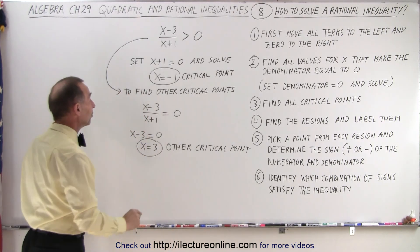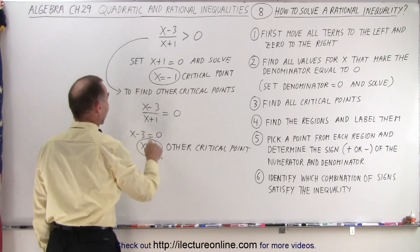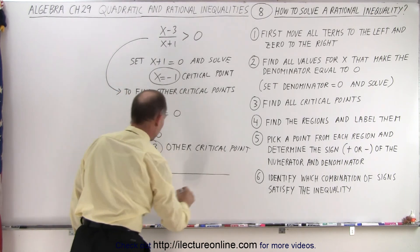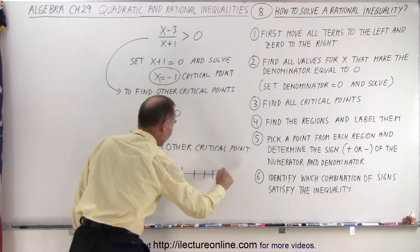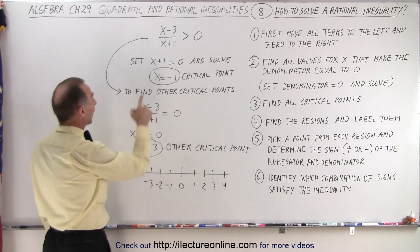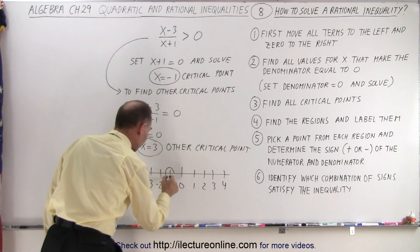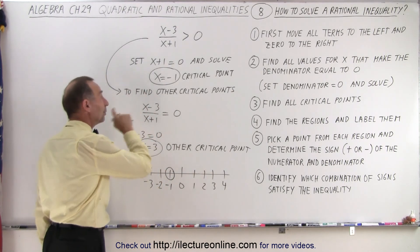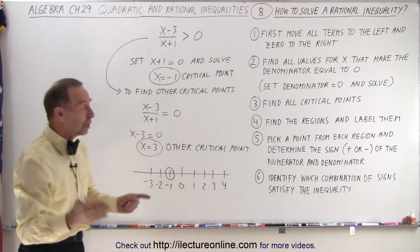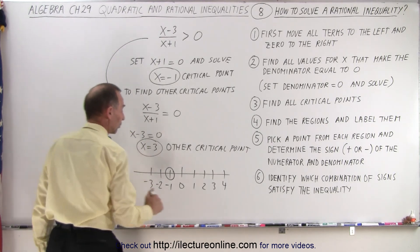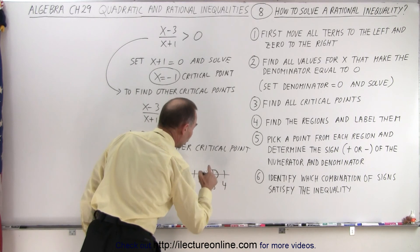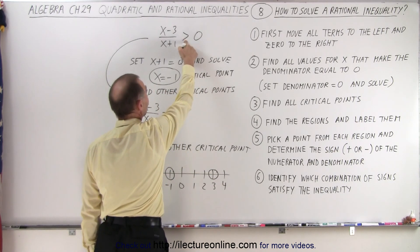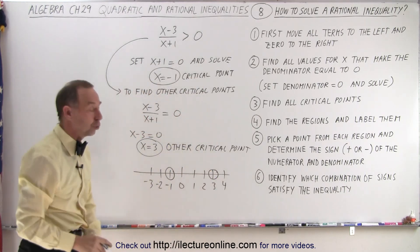Now that we found both critical points, x equals negative one and x equals three, we can place those on the number line. We draw a circle around x equals negative one — that one will not be filled in because it cannot equal negative one. x equals three will also not be filled in because we don't have an equal sign. If this were greater than or equal to, then three would be part of the solution.